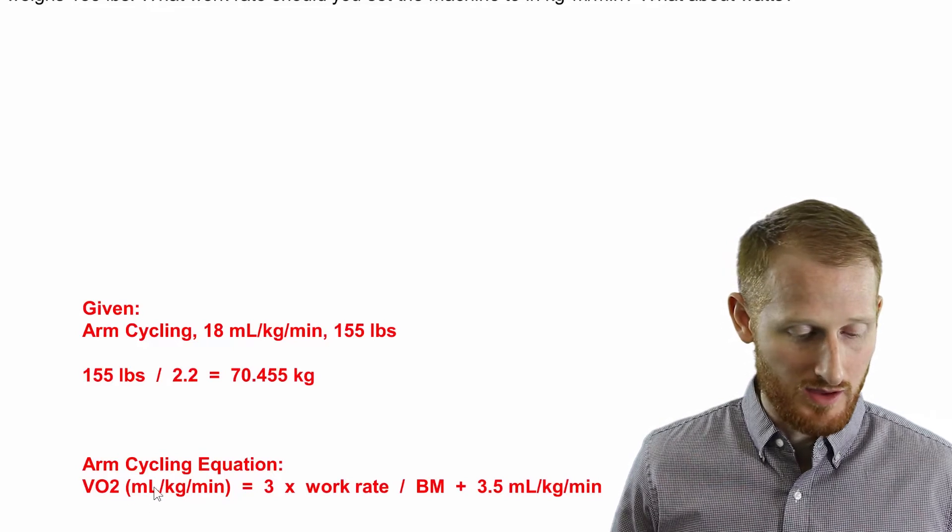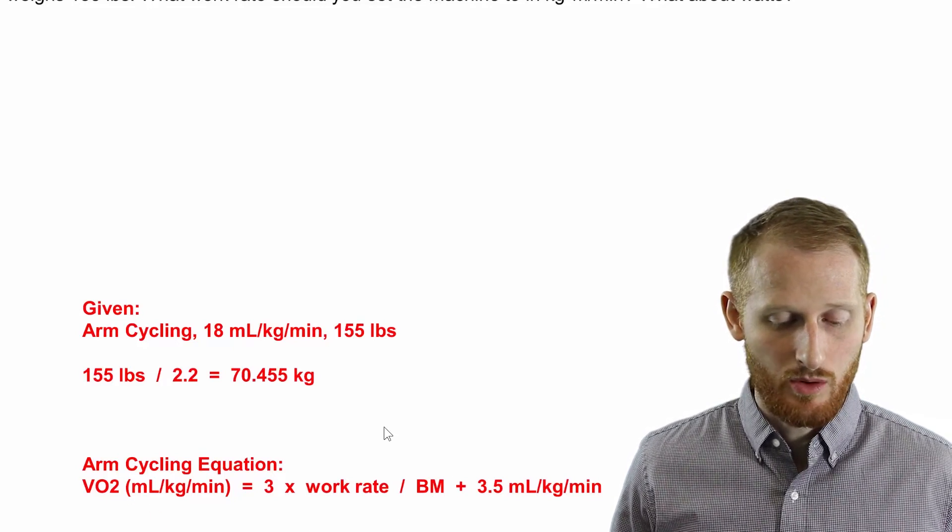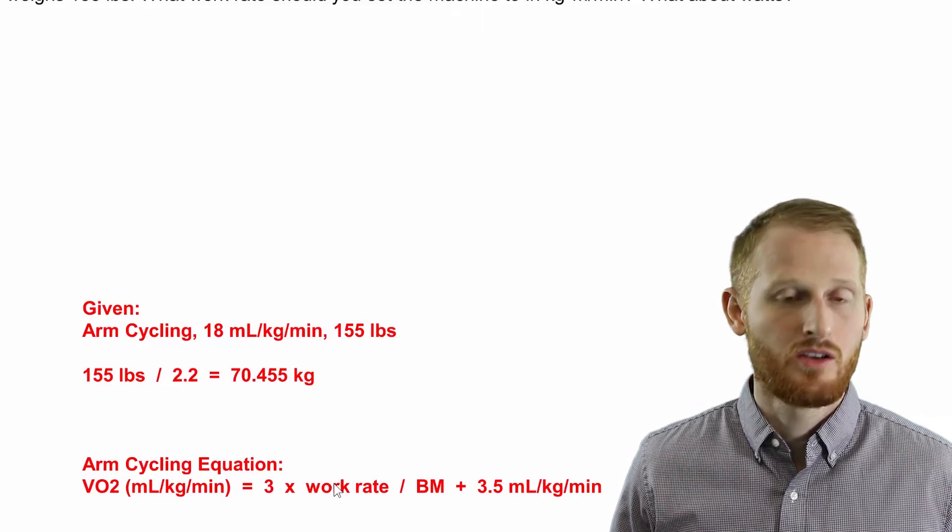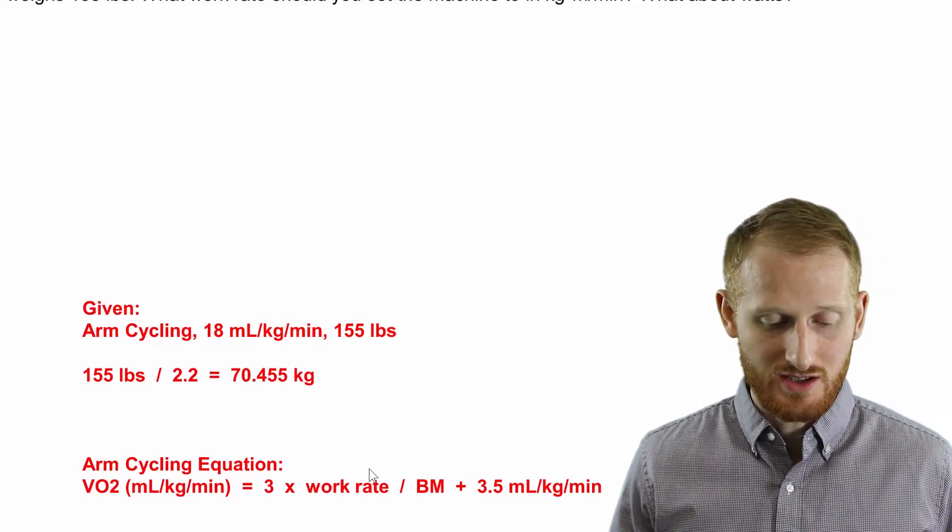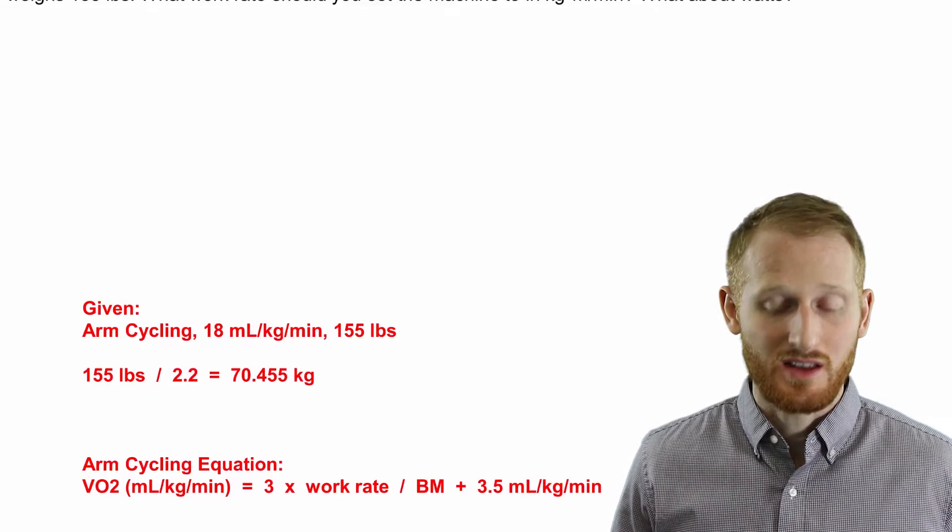Now this equation is not in the correct order for what we're trying to accomplish here. We have his VO2, we have his body mass, what we're trying to calculate is work rate. All right, so we need to rearrange this equation to isolate work rate.